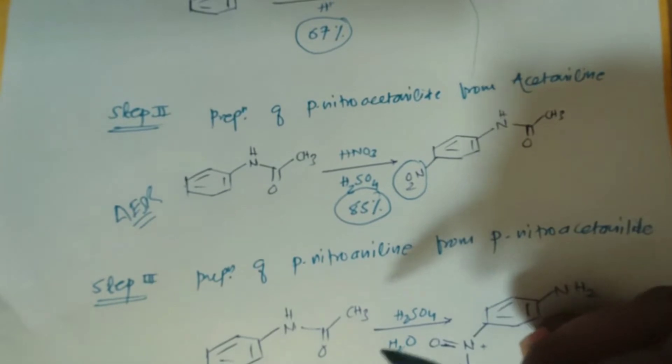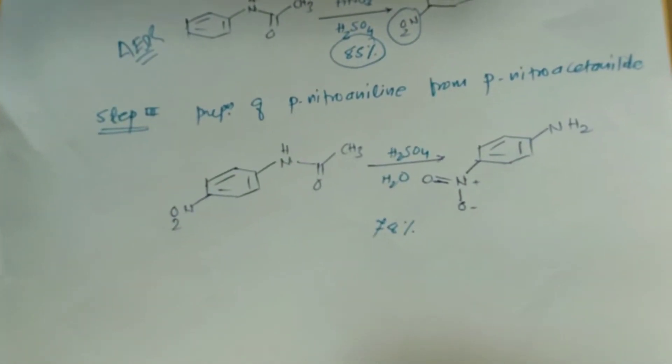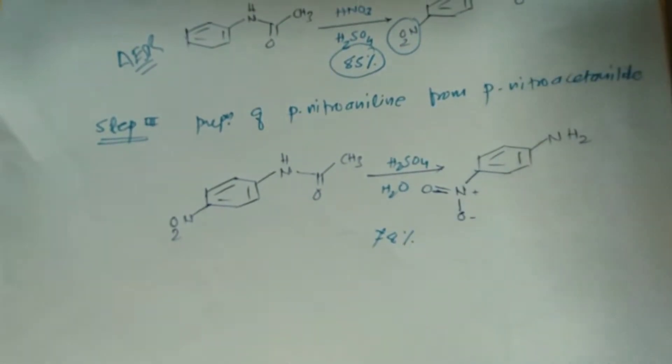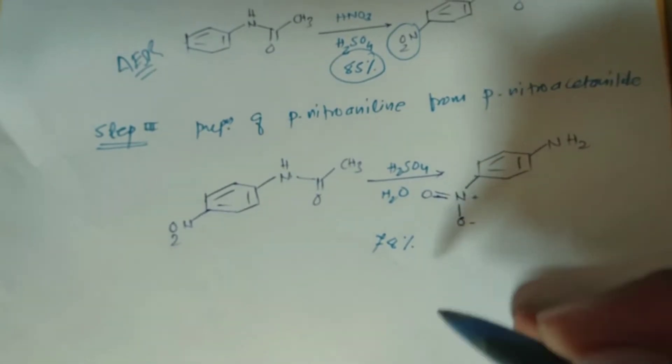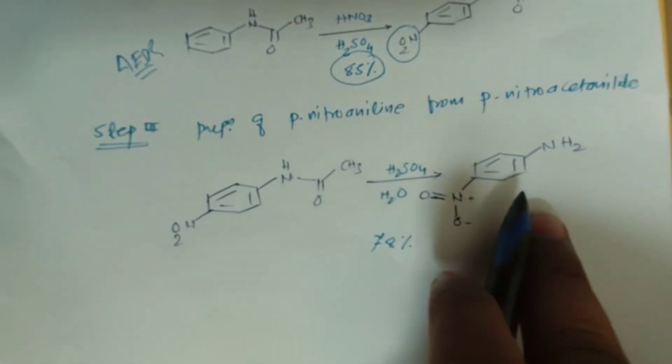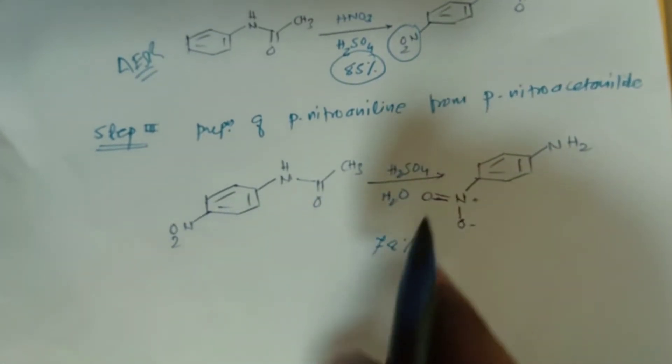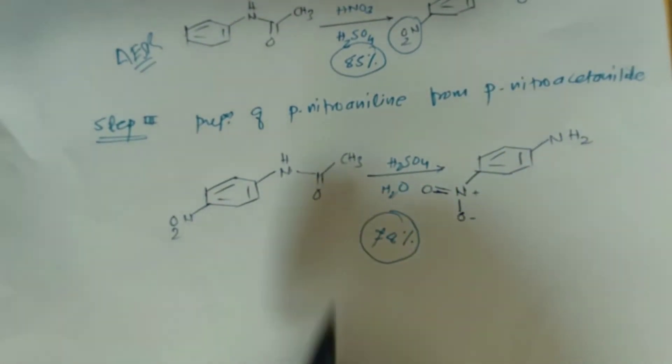In the last step, the preparation of para-nitro aniline from para-nitro acetanilide. With the help of simple acid hydrolysis, it converts the acetanilide group to aniline. The yield of this reaction is 78%. This is the multi-step mechanism. Now, how to find out the overall yield of this reaction?